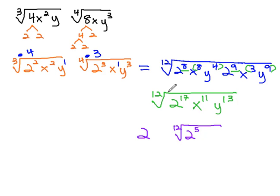For the x's, 11 divided by 12 is 0, remainder 11. 0 x's come out, all 11 remain inside the radical.